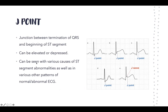Now we'll talk about the J point, defined as when the QRS is terminated and the ST segment begins. J points can be elevated or depressed and can be seen in various causes including ST abnormalities. They can be noted in both normal and abnormal ECGs, making them quite nonspecific. You can see examples of both elevated and depressed J points.